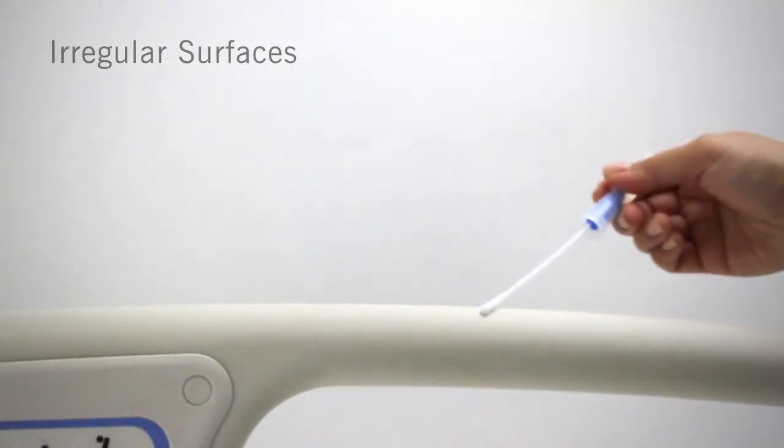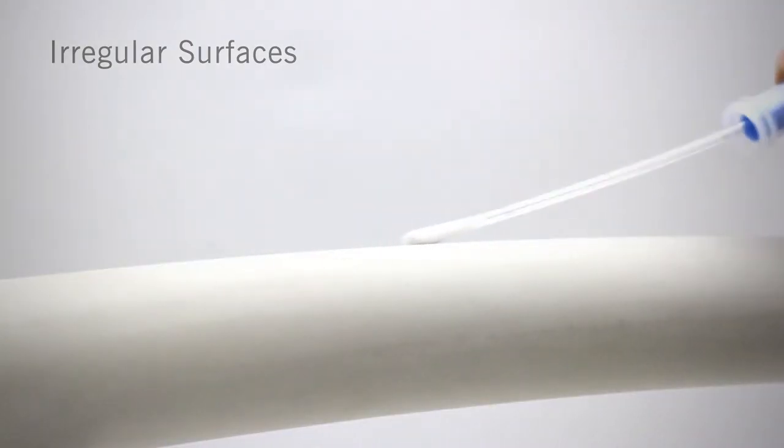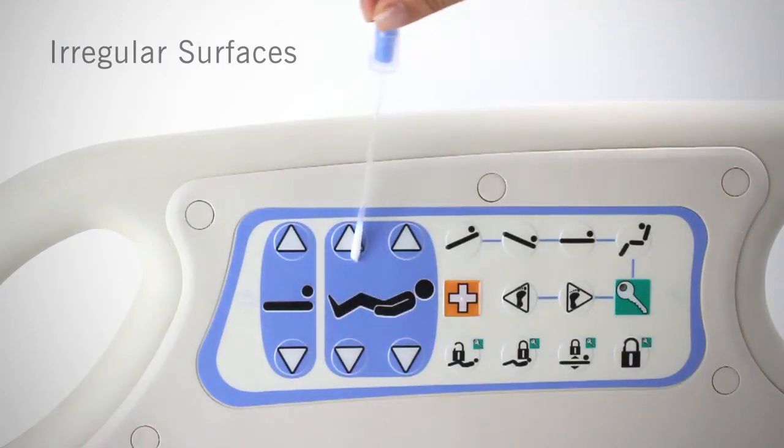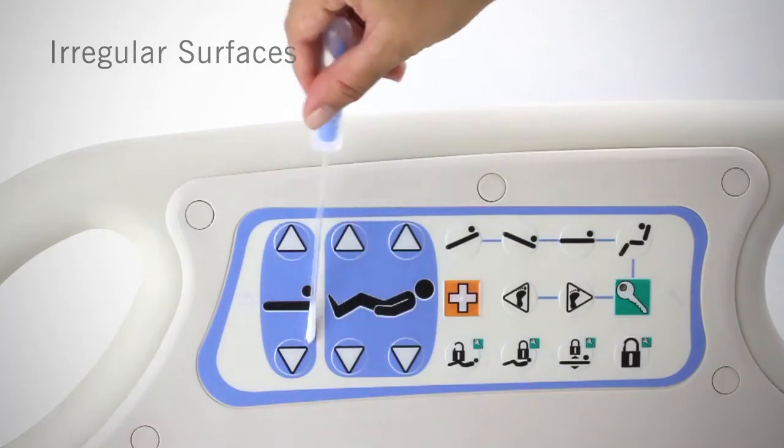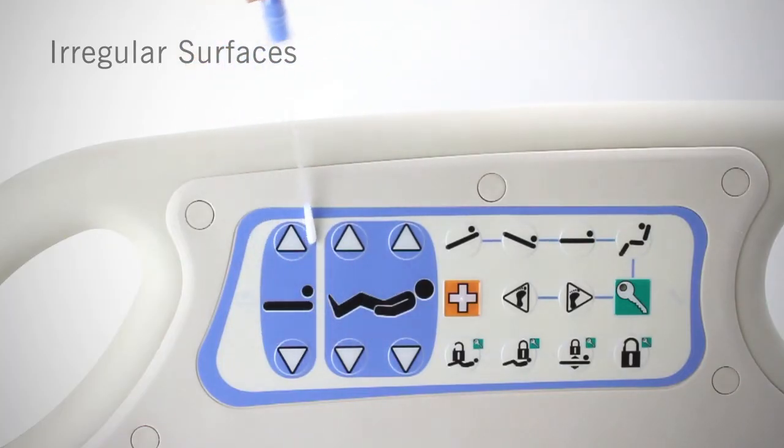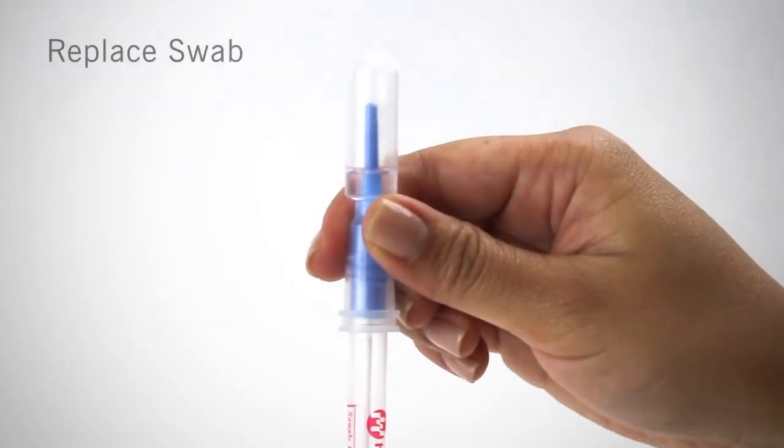When swabbing an irregular surface, such as a door handle, light switch, bed rail, or monitor panel, ensure the swabbing technique remains consistent and swab a large enough area to collect a representative sample. After you've finished swabbing, replace the swab in the tube.